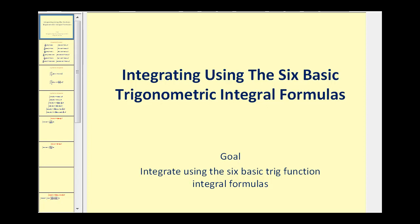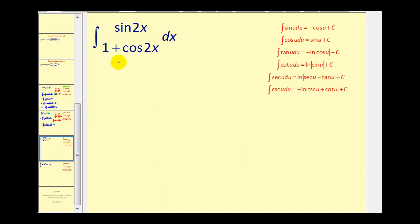Welcome to part two of some examples integrating using these six basic trig integral formulas. Here we have the integral of sine two x divided by the quantity one plus cosine two x, integrated with respect to x.